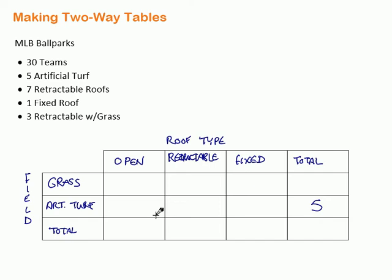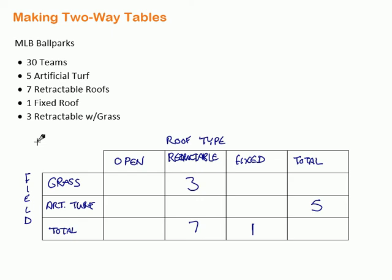There is one fixed roof. You might think it has to be artificial turf — and it does. Then we have three stadiums with a retractable roof and grass. So in the retractable column, grass row, we put three. Those stadiums need to open up so the grass can get sunshine. In the retractable column, we know the total is seven and three have grass, so three plus four equals seven — meaning four retractable-roof stadiums have artificial turf.